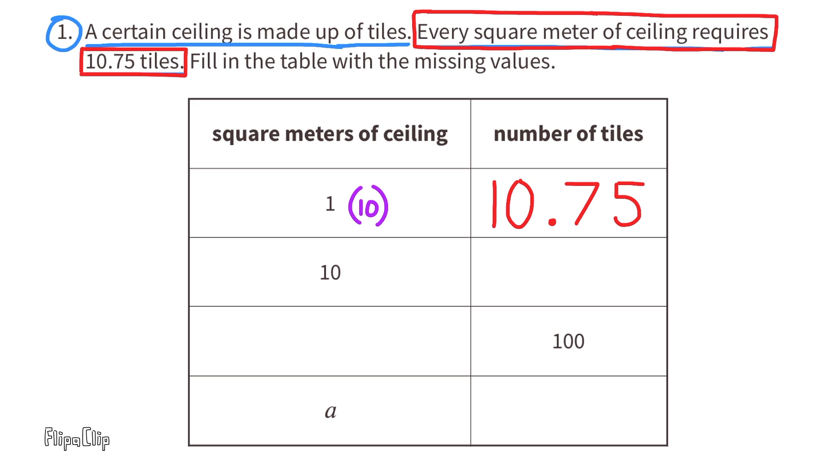Multiply the 1 times 10 to get 10 square meters, and multiply 10.75 times 10 to get 107.5 tiles. That's 10 times bigger than 10.75. So for every 10 square meters of ceiling, you would need 107 and a half ceiling tiles.